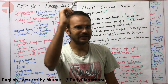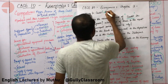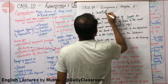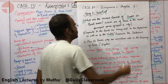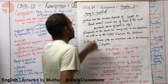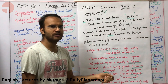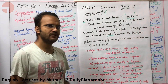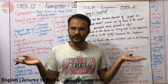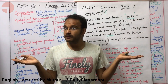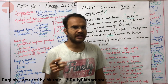Welcome to Gully Classroom. This is the fourth lecture on the topic Money and Credit, CBSE Class 10 Economics, Chapter 3. In this fourth lecture, as promised, we will be studying specifically about cooperatives and self-help groups.